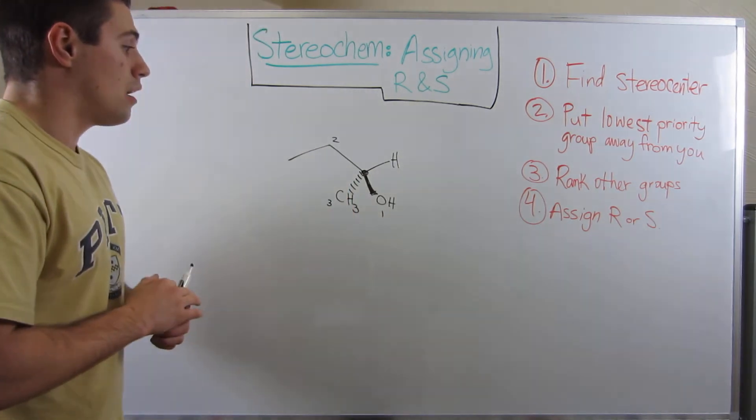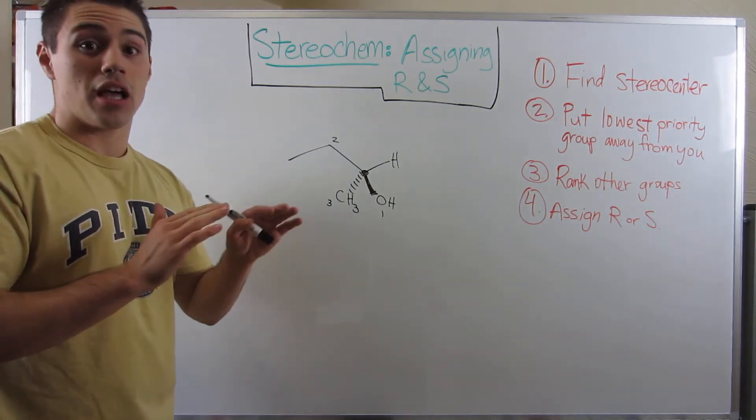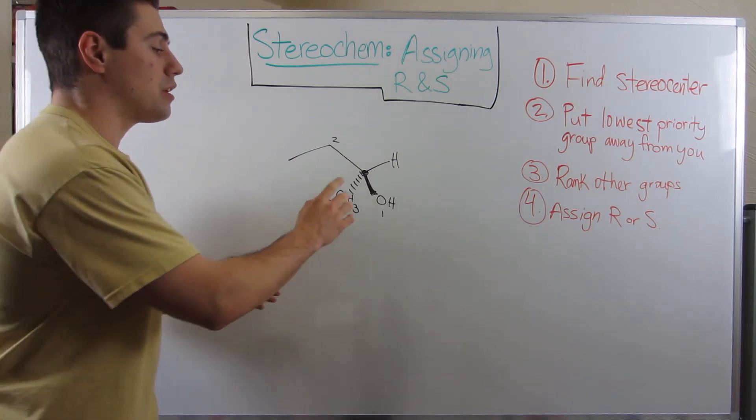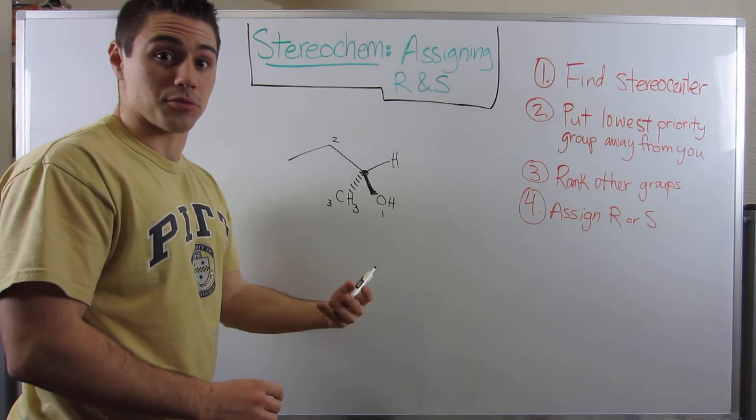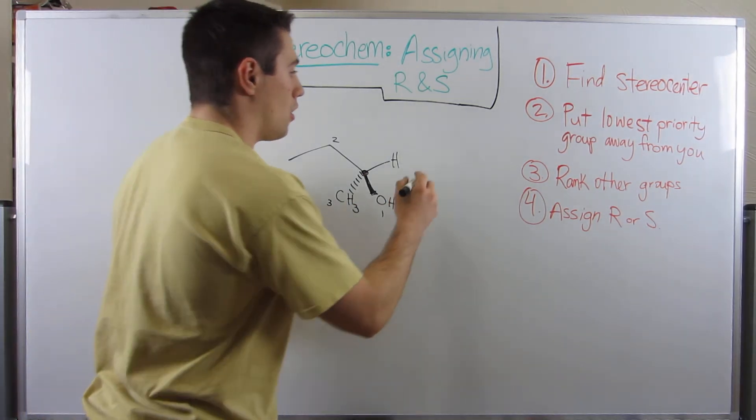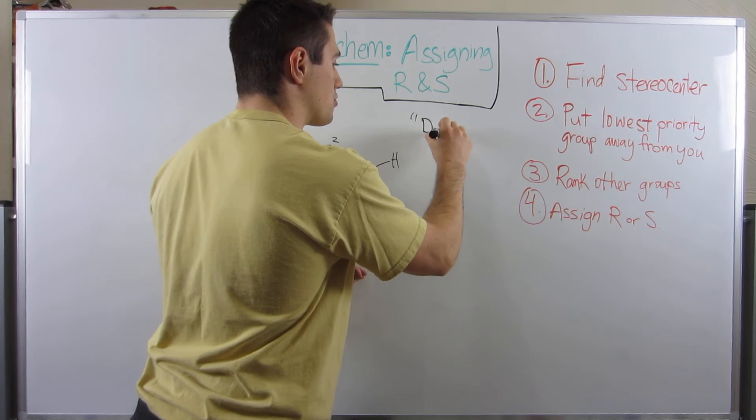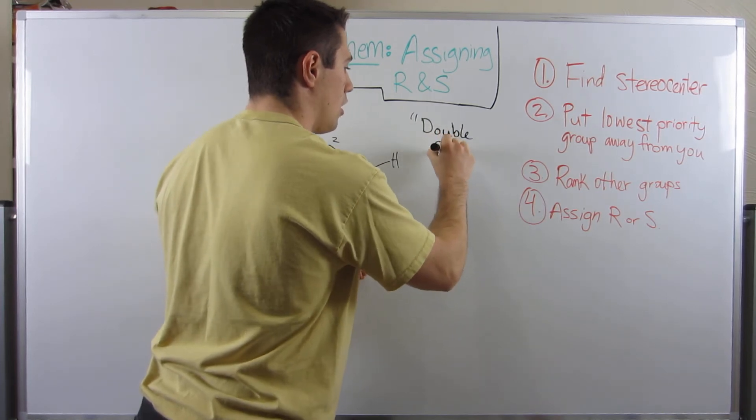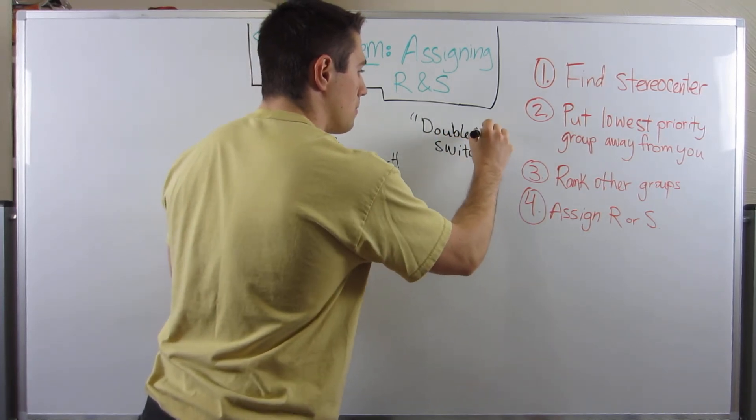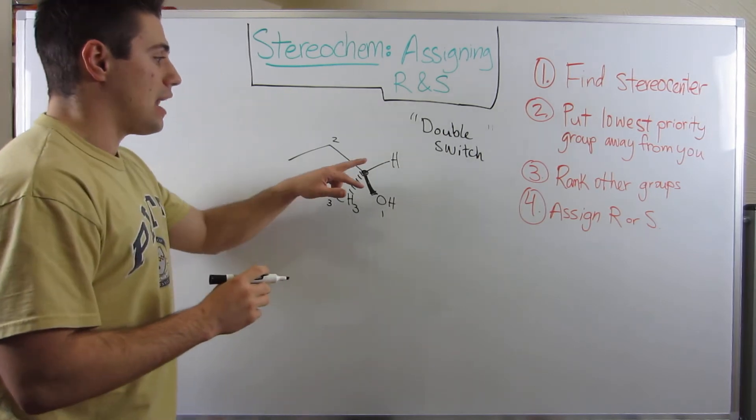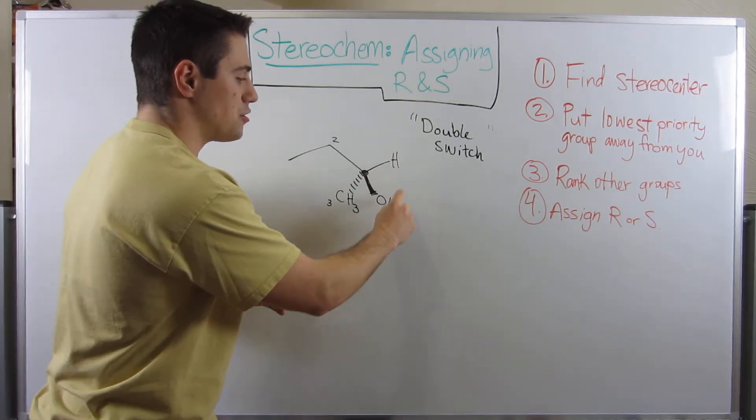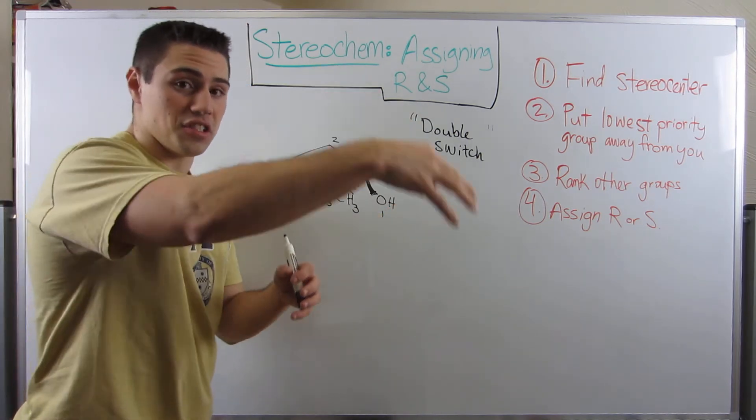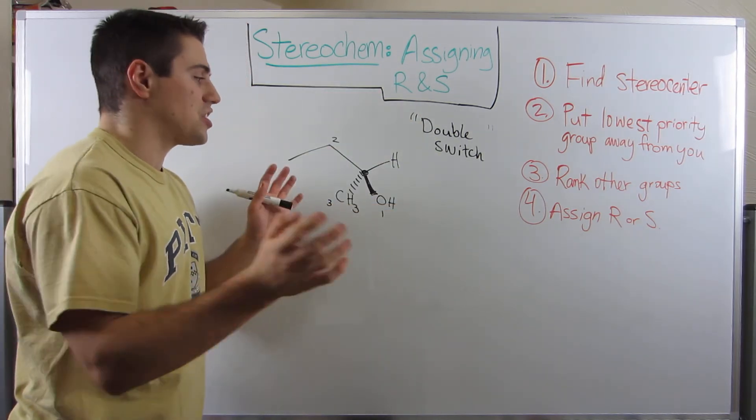So we can't even assign it all right now because we neither have this group facing towards us, nor is it facing away from us. So we need to kind of use a technique called the double switch. Okay. So if you were to flip any two groups on any stereo center, so if I flipped, just say this H and this OH, it inverts the stereochemistry. So let's just say I had R here. I don't know if we do. If I flip these two, we would then go from R to S.